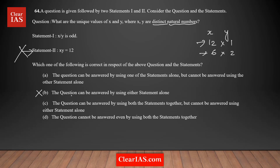Option B is eliminated, because option B says the question can be answered using either statement alone, and I just proved statement two is not sufficient. Now analyzing statement one: x divided by y is an odd number. Is this sufficient to get a unique value for x and y? No, because there are multiple combinations — for example, x=3 and y=1 gives 3 divided by 1, which is 3, an odd number.